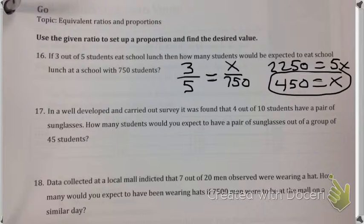Alright, so 17. In a well-developed and carried-out survey, it was found that 4 out of 10 students have a pair of sunglasses. How many students would you expect to have a pair of sunglasses out of a group of 45 students?